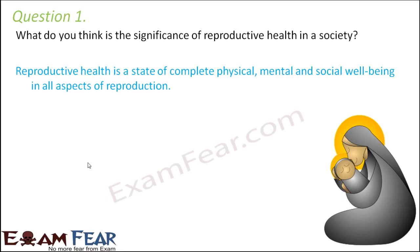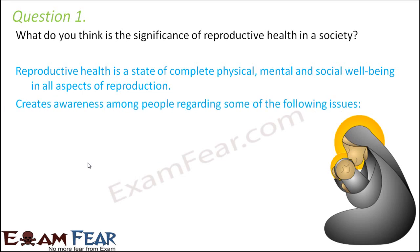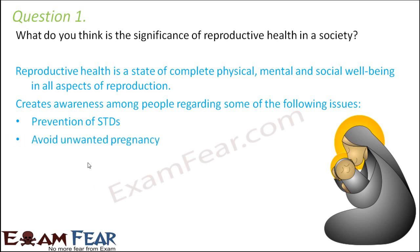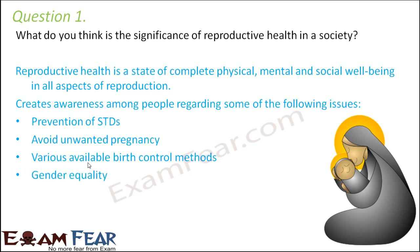This is what we have been discussing. Reproductive health is a state of complete physical, mental and social well-being in all aspects of reproduction. Reproductive health creates awareness among people regarding important and sensitive issues like prevention of STDs, because several people die suffering from STDs just because they were unaware of it — they never went to a doctor out of shame. It also promotes avoiding unwanted pregnancy through various available birth control methods. Gender equality is promoted, and female feticide has been addressed so that people accept the girl child, because there is no difference between a girl or a boy.